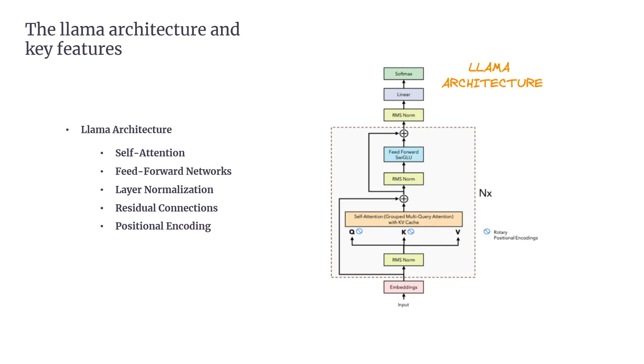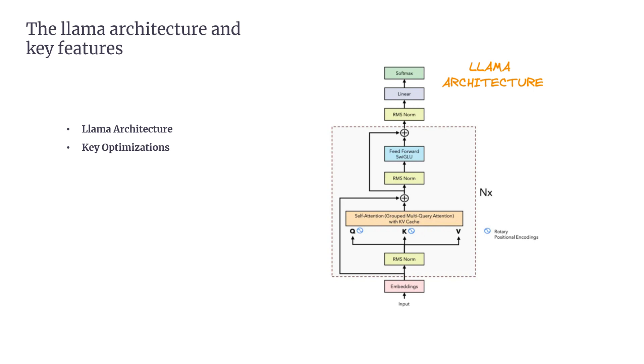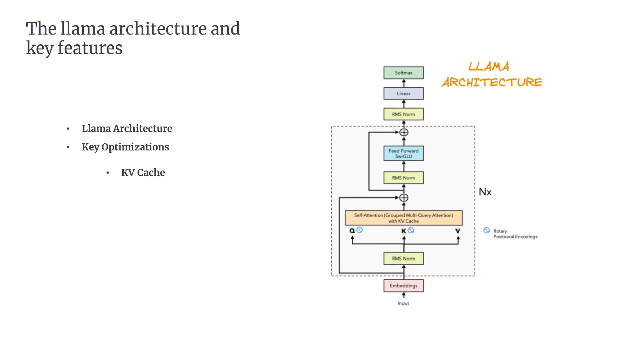The second, Key Optimizations. LLAMA includes several optimizations to enhance performance and efficiency. First, KV Cache. During inference, LLAMA employs a key value (KV) Cache. Instead of recalculating the key and value vectors for every token, LLAMA only caches the key and value vectors, updating only the query at each step. This reduces redundant calculations and speeds up the generation process.